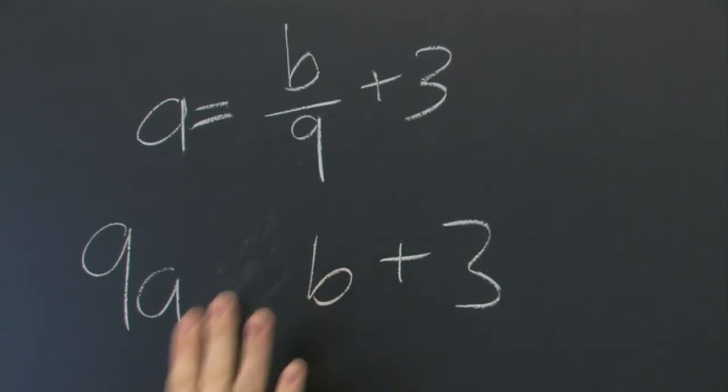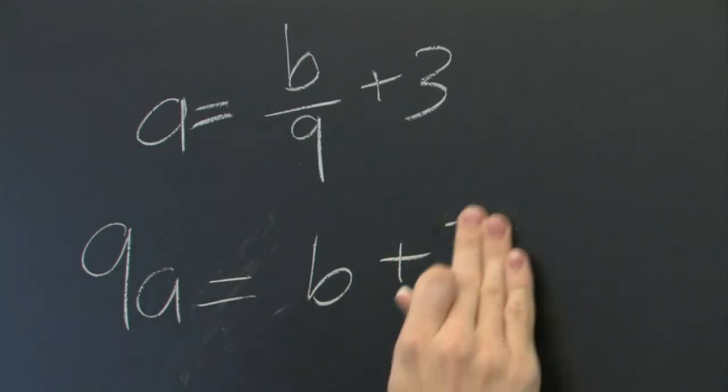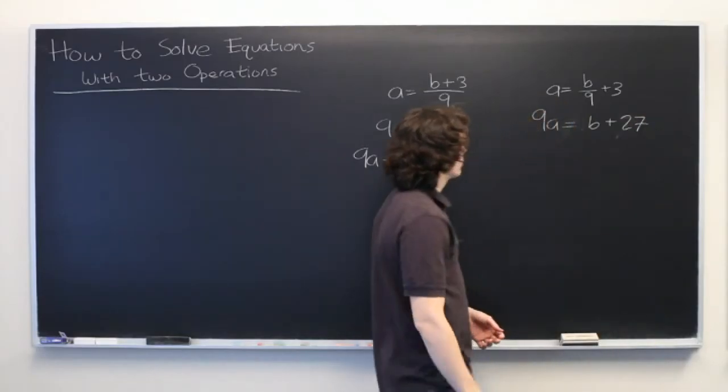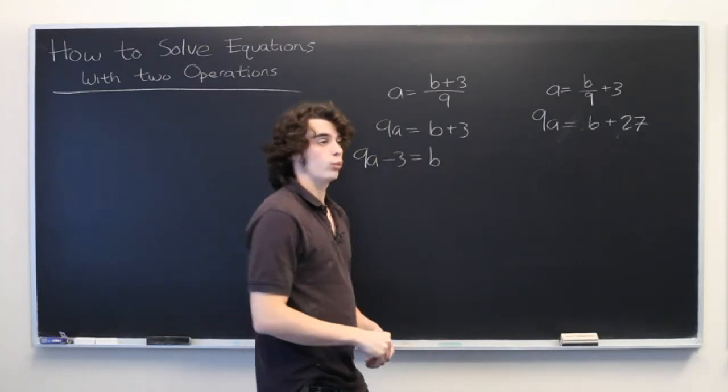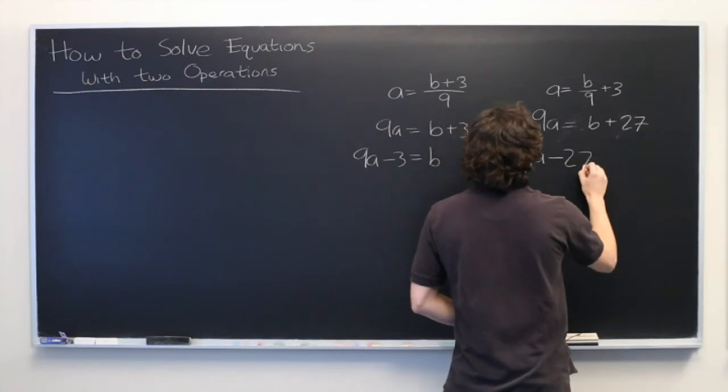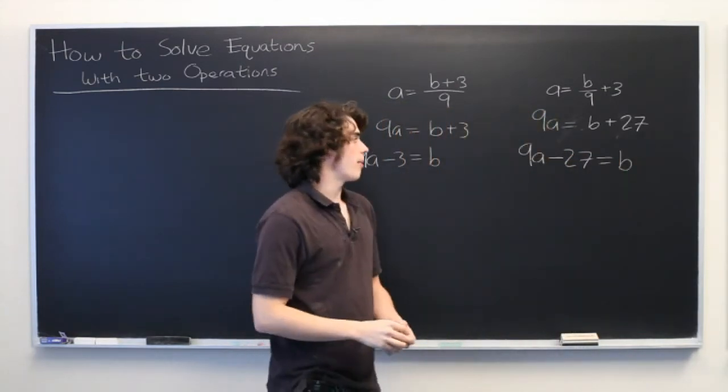So, the correct result of multiplying both sides by 9 will be b plus 27 on the right. Then from here, we subtract 27 from both sides and we've got our final answer. b equals 9a minus 27.